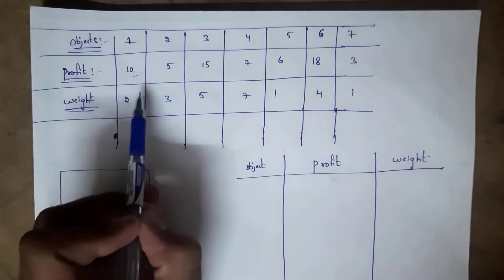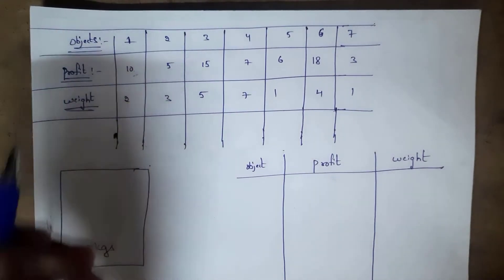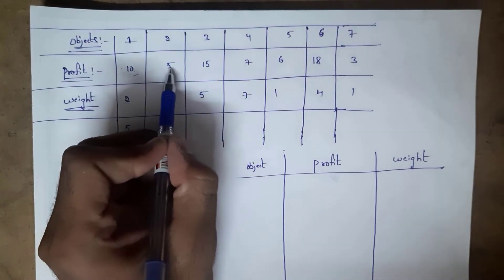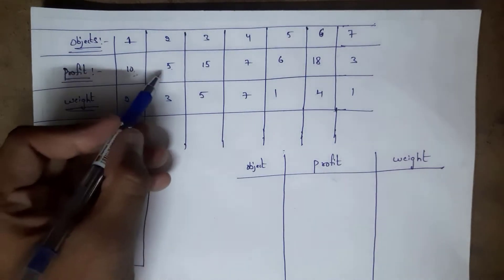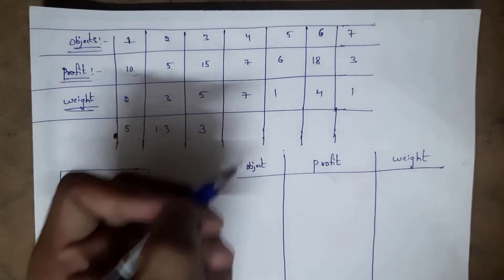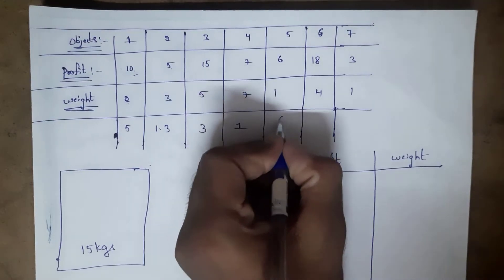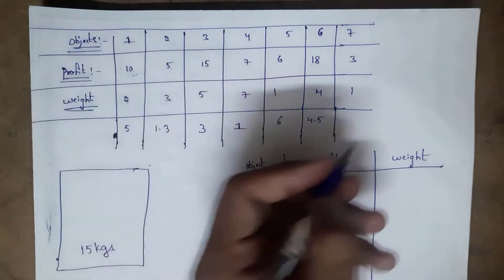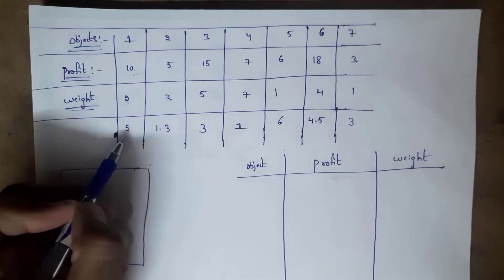To find profit per kg, we calculate profit divided by weight for each object. Object 1: 10/2 = 5. Object 2: 5/3 = 1.67. Object 3: 15/5 = 3. Object 4: 7/7 = 1. Object 5: 6/1 = 6. Object 6: 18/4 = 4.5. Object 7: 3/1 = 3. Among all these, the highest profit per kg is 6.